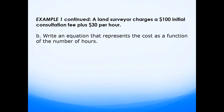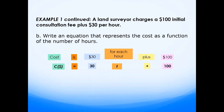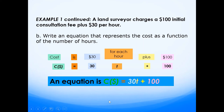The next part asks for an equation representing the cost as a function of the number of hours. The cost is $30 for each hour plus $100 initial consultation fee. So cost in dollars equals 30 times t (time in hours) plus $100. Putting that together: cost = 30t + 100. The coefficient of t is the gradient — $30 per hour — and the y-intercept is the initial cost of $100.